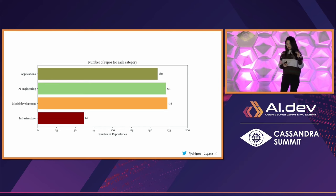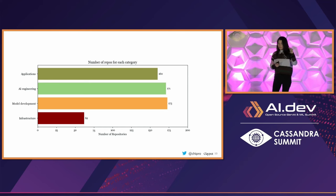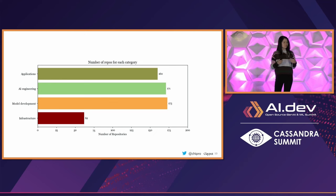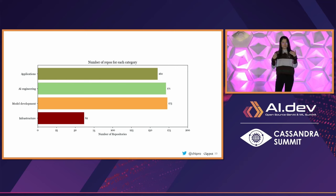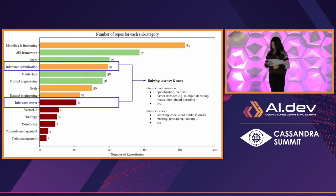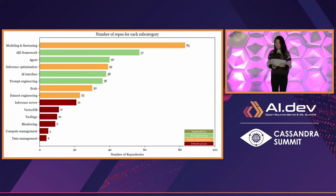When we try to categorize the breakdown by number of repos, we see that most of the repos we found are in AI engineering and model development. But what really surprised me is the number of open source applications out there. It's very easy to find a GitHub repo that meets whatever exact need you have — and it's totally open source.